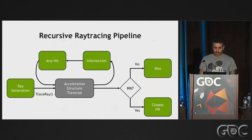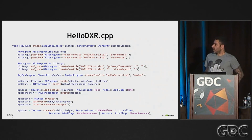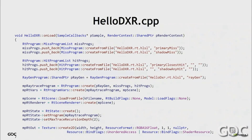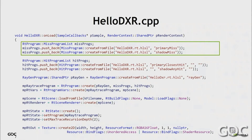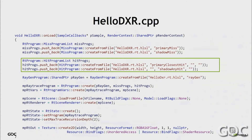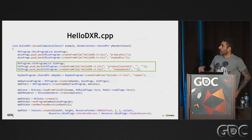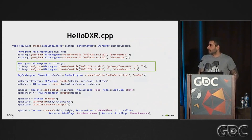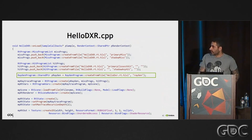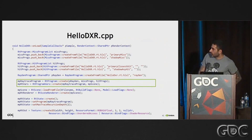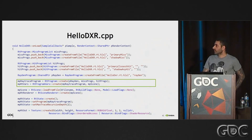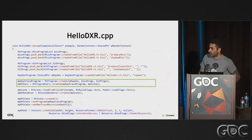So this is our own code. The first part basically creates our miss programs and our hit programs. You can see there are two types of shaders. We create a primary miss and a shadow miss, and the same for the closest hit shaders, and a single ray generation shader. We use those programs to create something called a raytrace program, and from that, RT program vars.